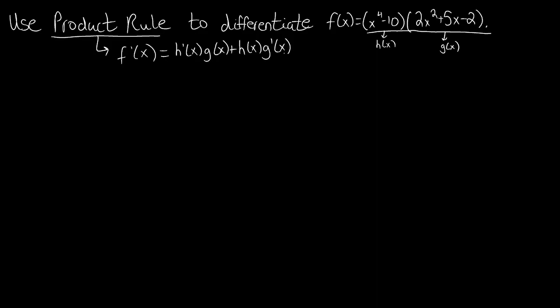Before we can use the product rule, we need to check and make sure that on their own, these two individual pieces, these two factors that are part of the multiplication, can be differentiated on their own. If we look at x to the fourth minus 10, we know it can be differentiated by the power rule, and the same can be said for this quadratic that we have here. So we know they're both differentiable, so we can use the product rule.